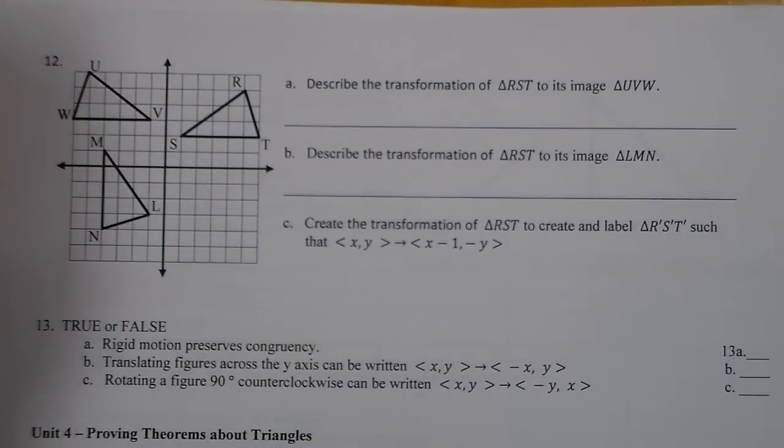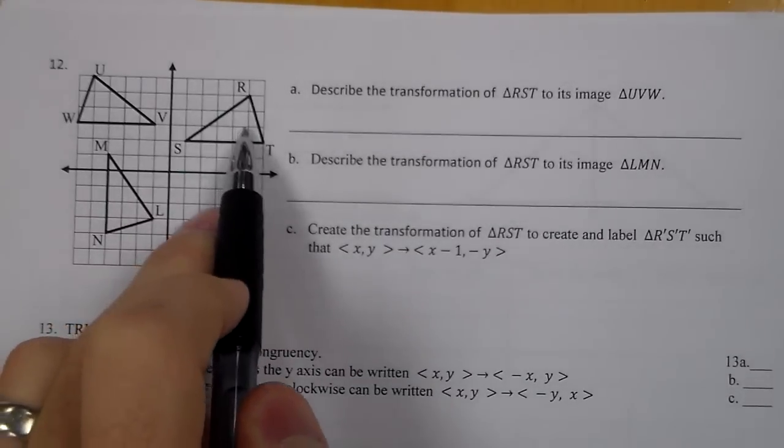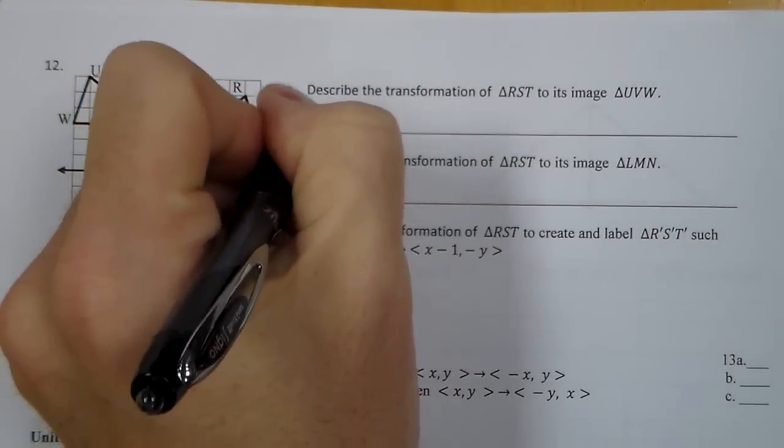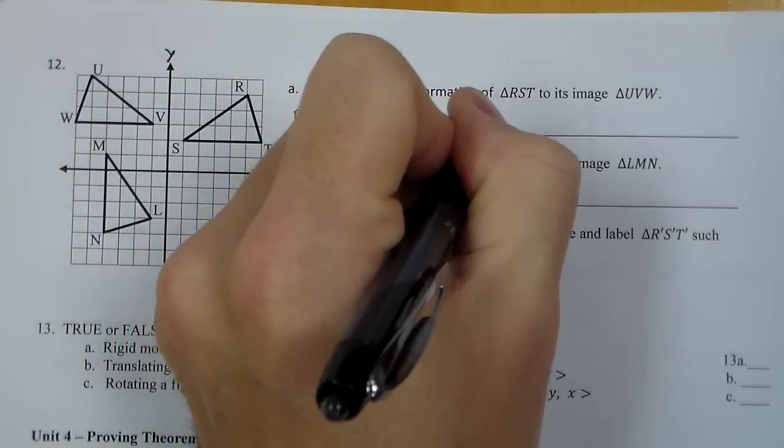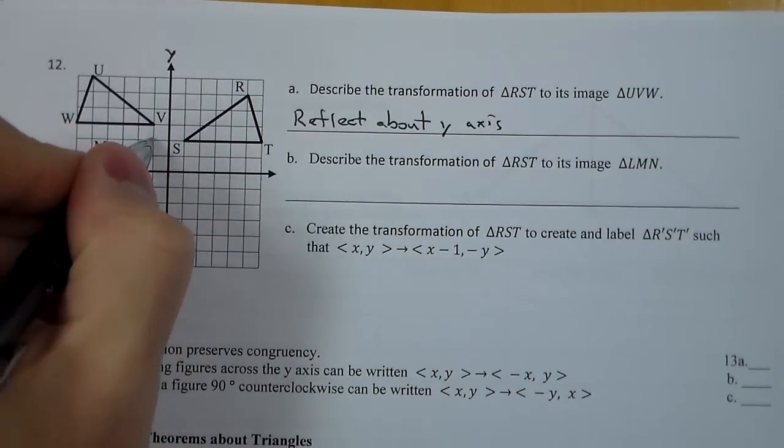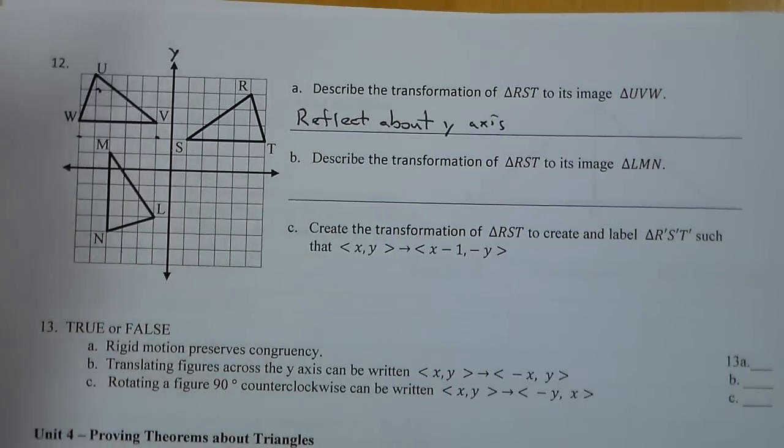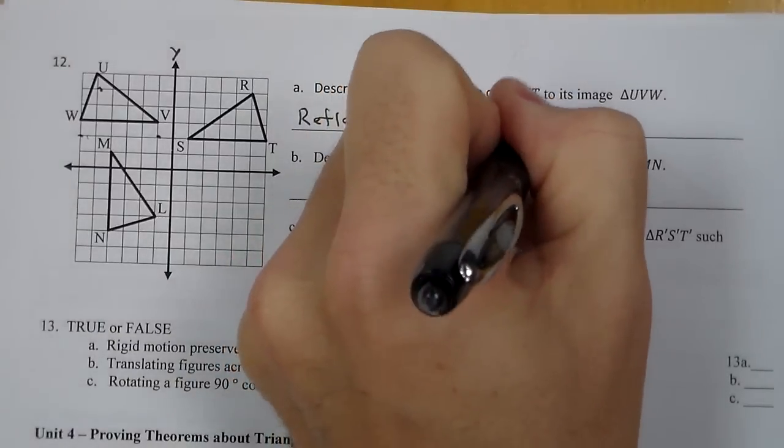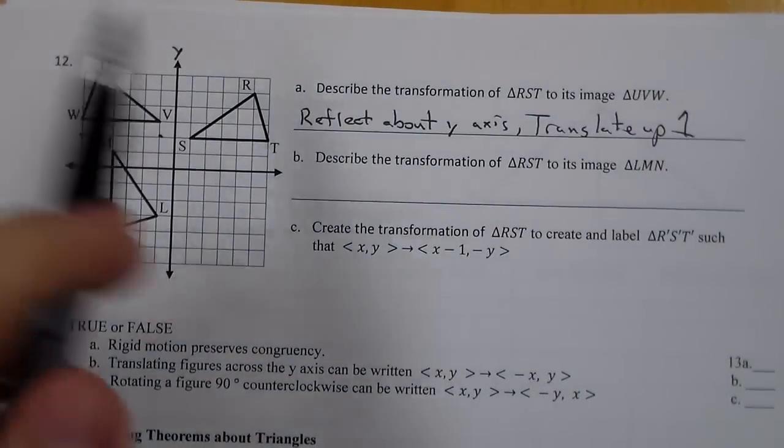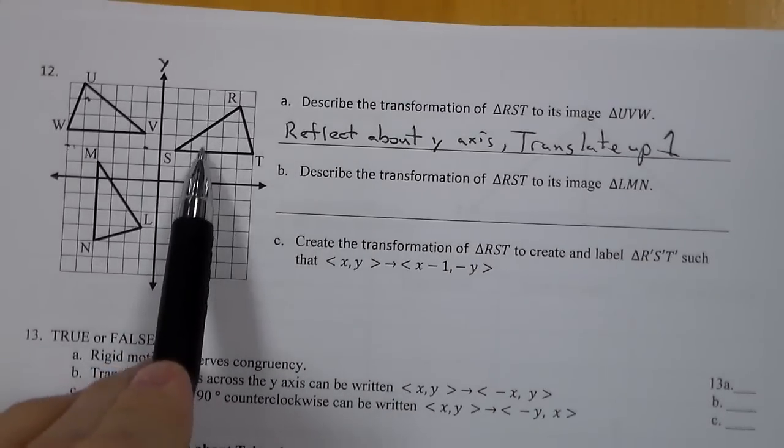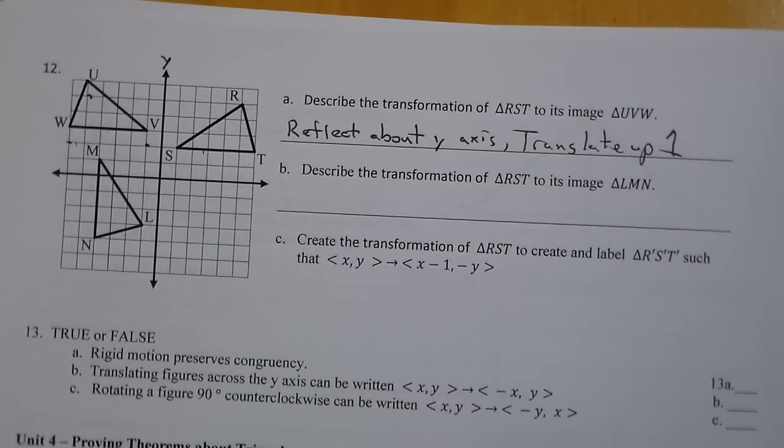Now on number 12, we're looking from RST to UVW. So I'm looking here, first thing I could have done is done a reflection. So I'm going to say reflect about, it's going to be the Y axis. And that would take to right here, here, and here. And then from there, I'd have to shift up. So then we'll say translate up 1. Now, what I also could have done is done the reverse of that in the opposite order and gone translate up 1 and then reflect over, and I would have gotten to the same spot of UVW.